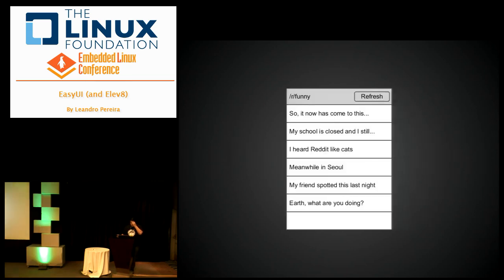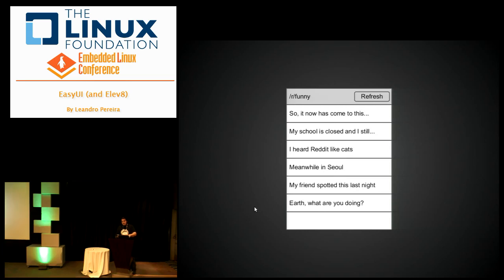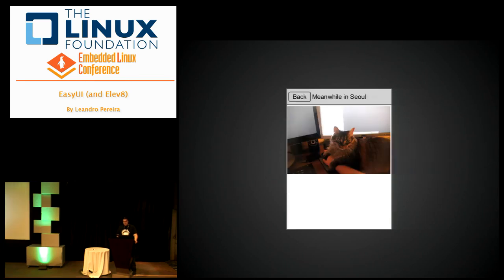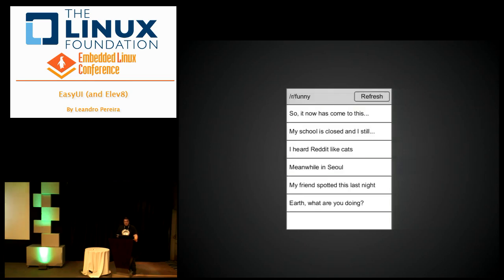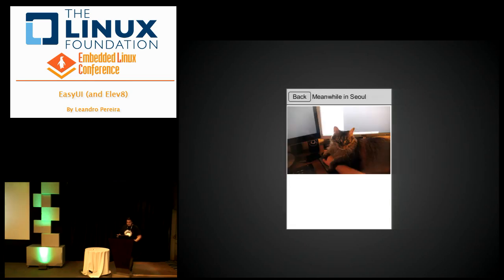Here's a plan — here's the mock-up of the interface. It's pretty simple. You have a bar with a refresh button on top, and then a list of whatever items there are in the slash funny subreddit. Whenever you click on an item, you just download and show whatever item it is. It's a pretty simple application — just a small screen but you have network access, a web browser, and lots of things going on.